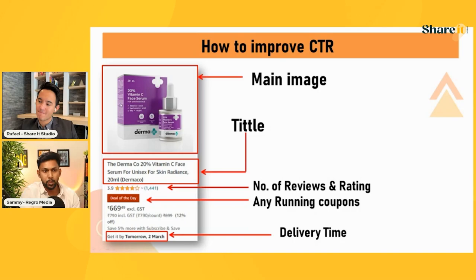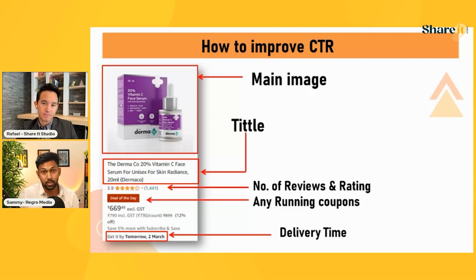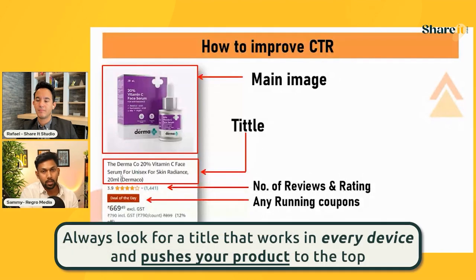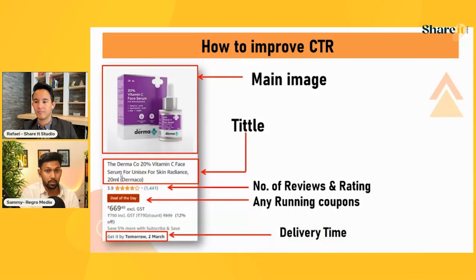For the main image, we've seen supplement brands where the bottle is taller, using a dimension of 1:1.5 or 1:2 to make the listing look taller and take more space — the image becomes about 20% bigger than normal. The next factor is your title. On mobile, only 79 to 89 characters are shown; the rest get cut off. On desktop, roughly 100 to 120 characters are shown. Make sure your title is optimized and your main selling points appear in those first visible characters.